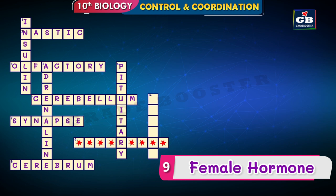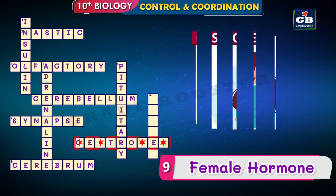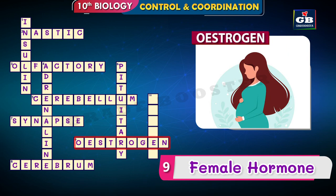Nine across — female hormone. That is the only hint. The answer is estrogen. Estrogen is the female reproductive hormone and it is secreted by the ovaries.